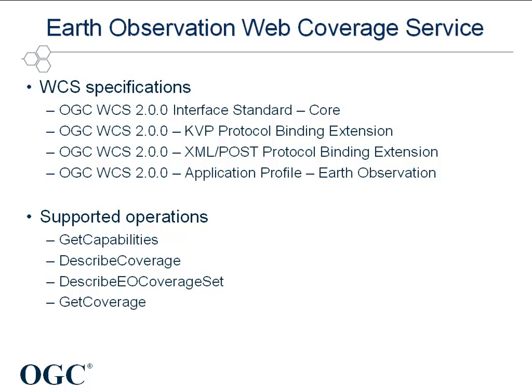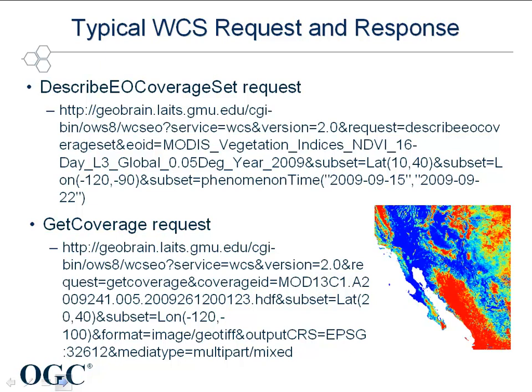GMU follows WCS's GeoRision 2.0 application profile for earth observation and its related extensions. For OWS 8, GMU has provided an open source reference implementation of WCS for EO data. To validate the capability of GMU's WCS and also contribute to the demo scenario about Amazon Draft,